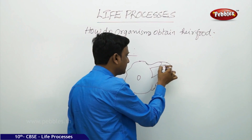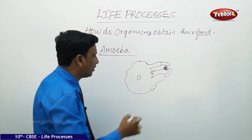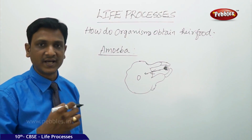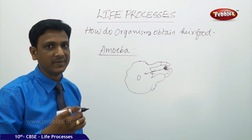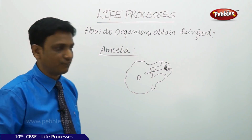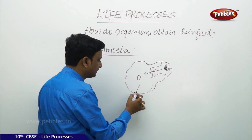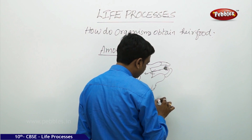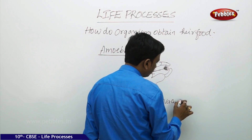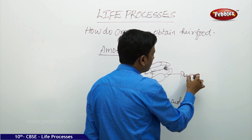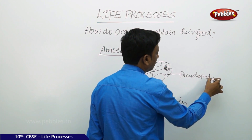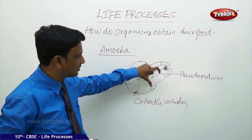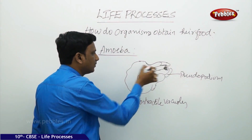These protrusions or extensions encircle the food, and the food is engulfed into the cell. Inside the cell, enzymes are present to digest the food — that is, to convert it into useful materials. The undigested food is sent out through contractile vacuoles. In this way, the special modification of the cell membrane in amoeba helps it to get its food.